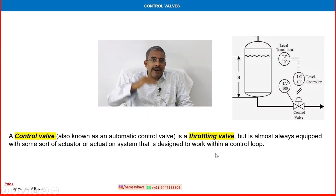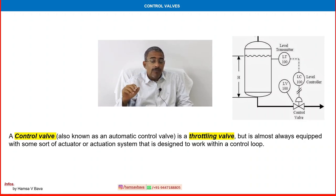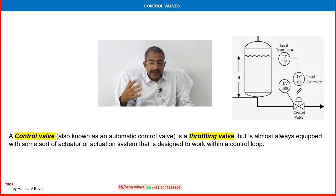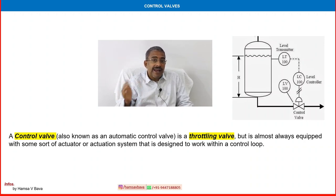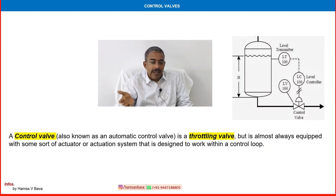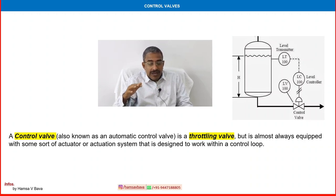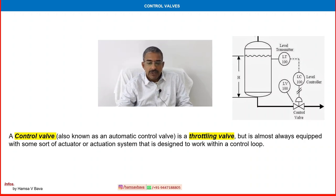You can move the valve up and down. You can do on-off, but mainly it is used for percentage-wise opening. That is the key point — it is a throttling valve. Using an actuator, it is remote operating, using a different actuator or actuation system.